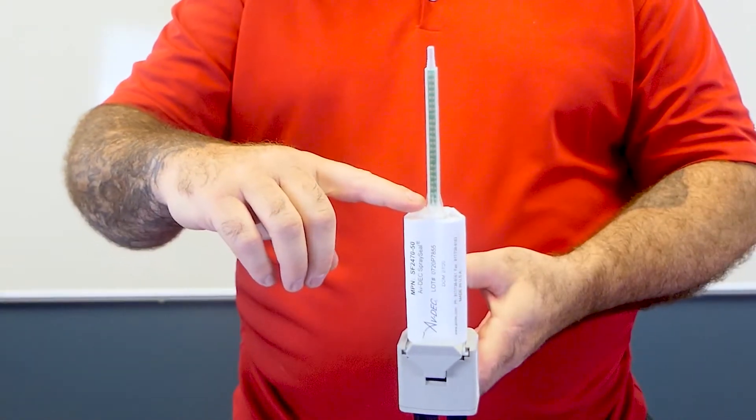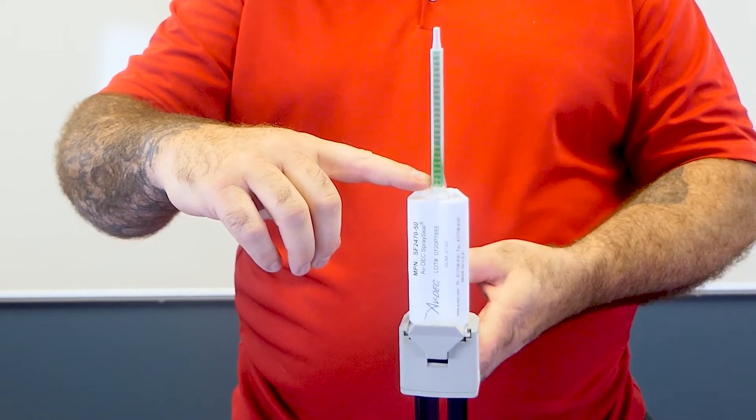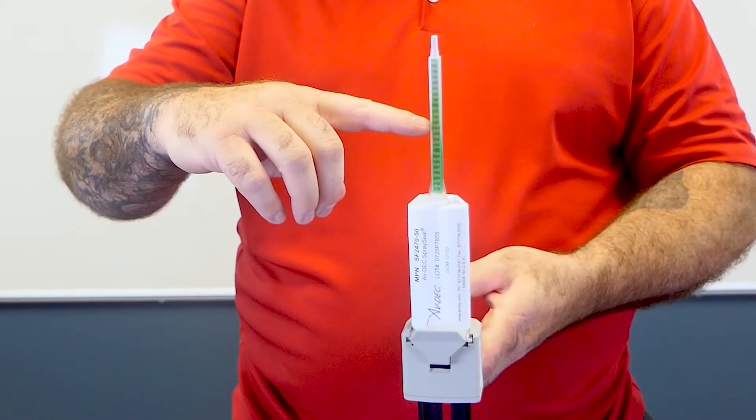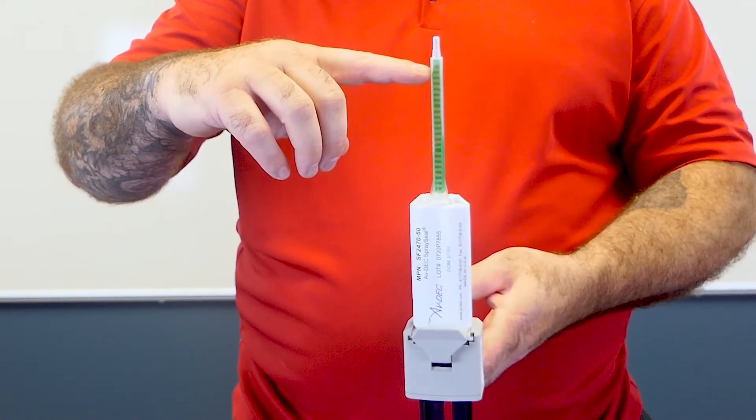Proper priming is critical for product performance. Hold sealant dispenser with mixing straw upright. Completely fill mixing straw by squeezing trigger of dispenser.